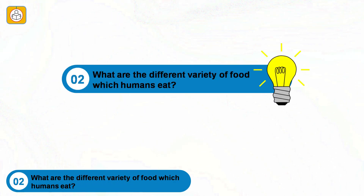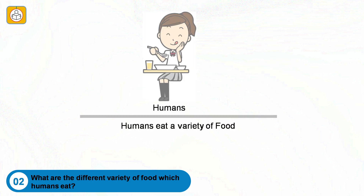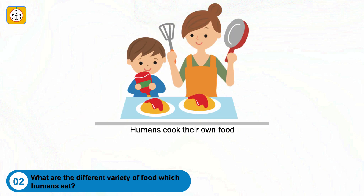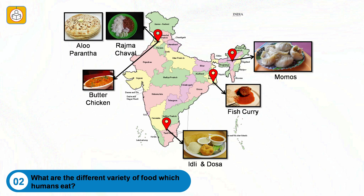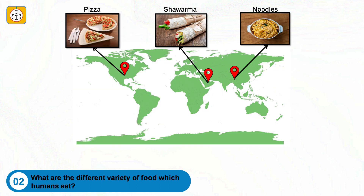What are the different varieties of food which humans eat? Humans eat a variety of food, and what is even more special about humans is that they cook their food. South Indians like their idli and dosa; aloo paratha and rajma chawal are favorites in North India. The Punjabis love to eat butter chicken whereas the Bengalis relish eating fish. People in North East India have momos. Similarly, different regions of the world also have different food — Chinese have noodles, Arabs have shawarma, and western countries have pizzas and burgers.